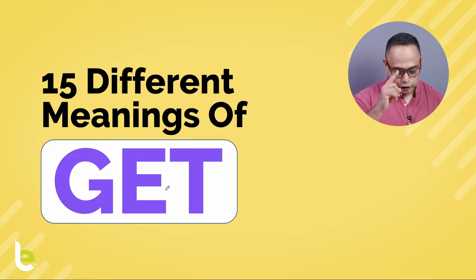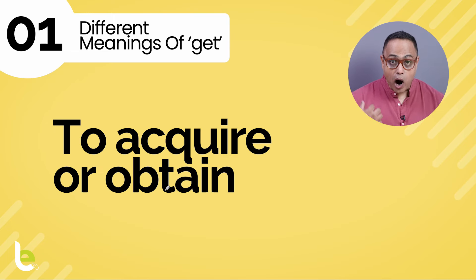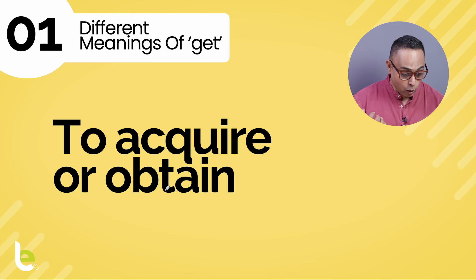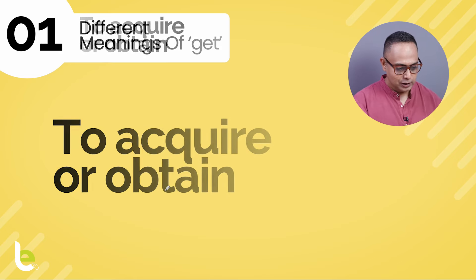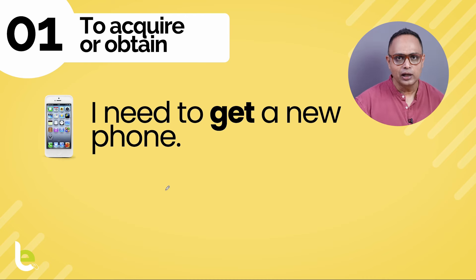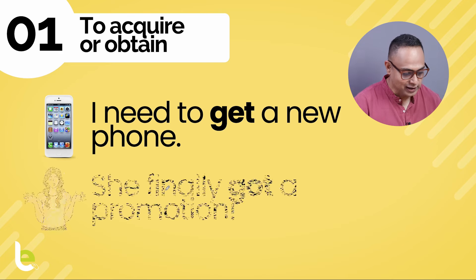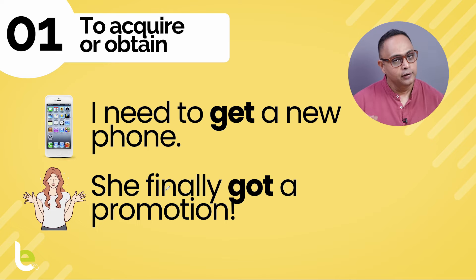Let's start with our first use, which is to acquire or obtain something. First example: 'I need to get a new phone.' — meaning I need to acquire it. Next example: 'She finally got a promotion.' — meaning she obtained or acquired a promotion.